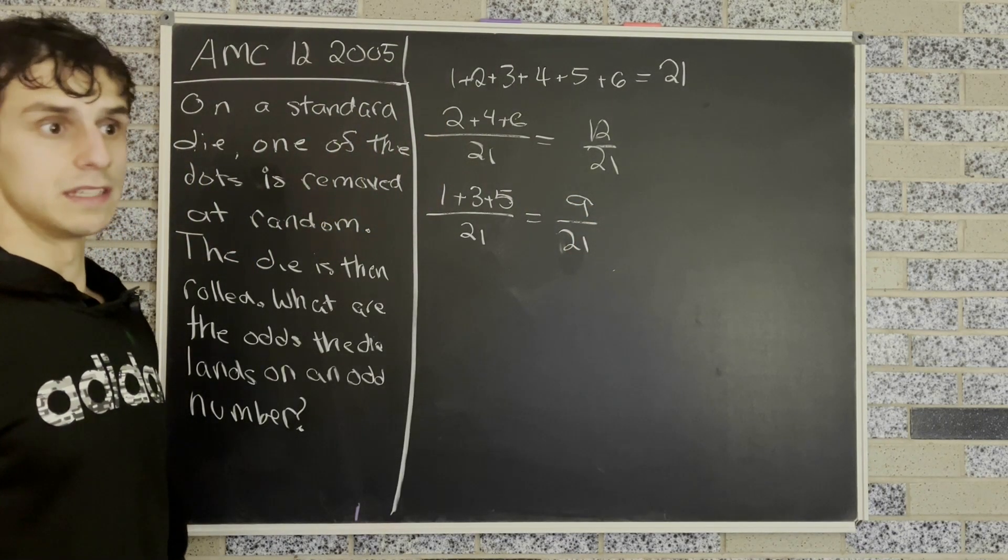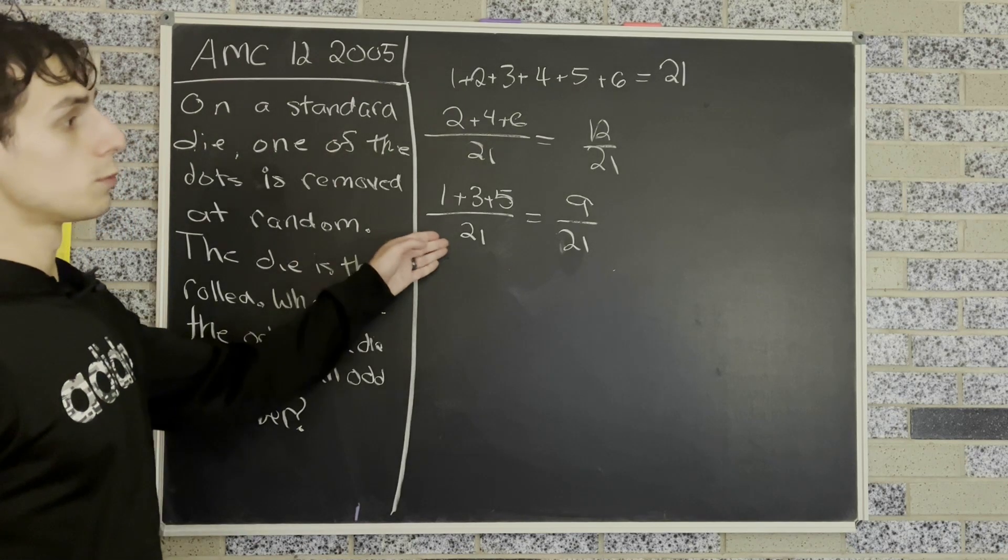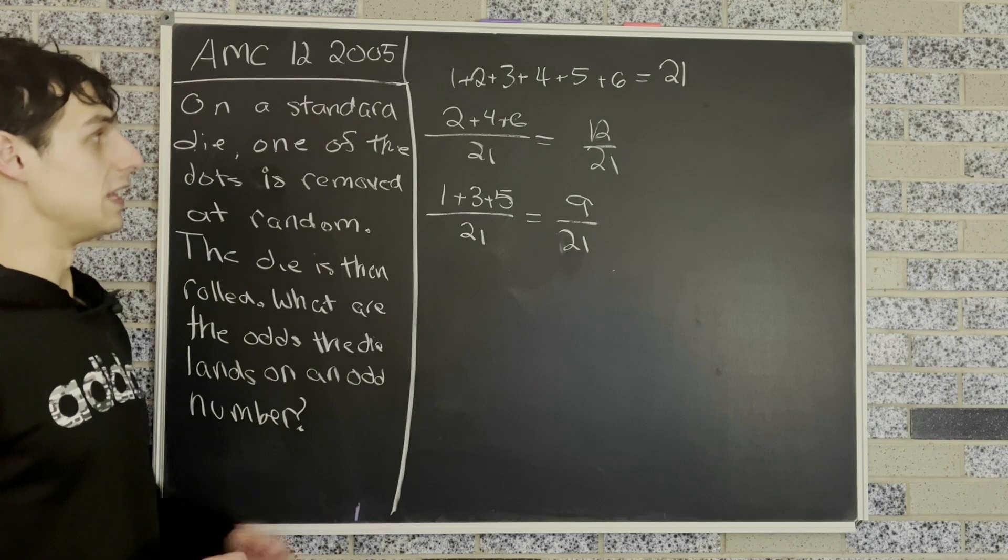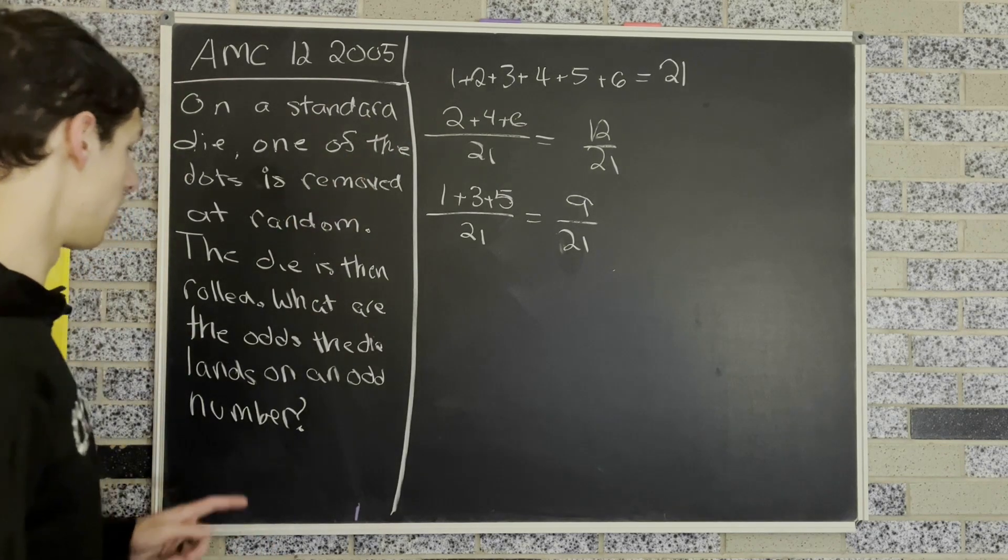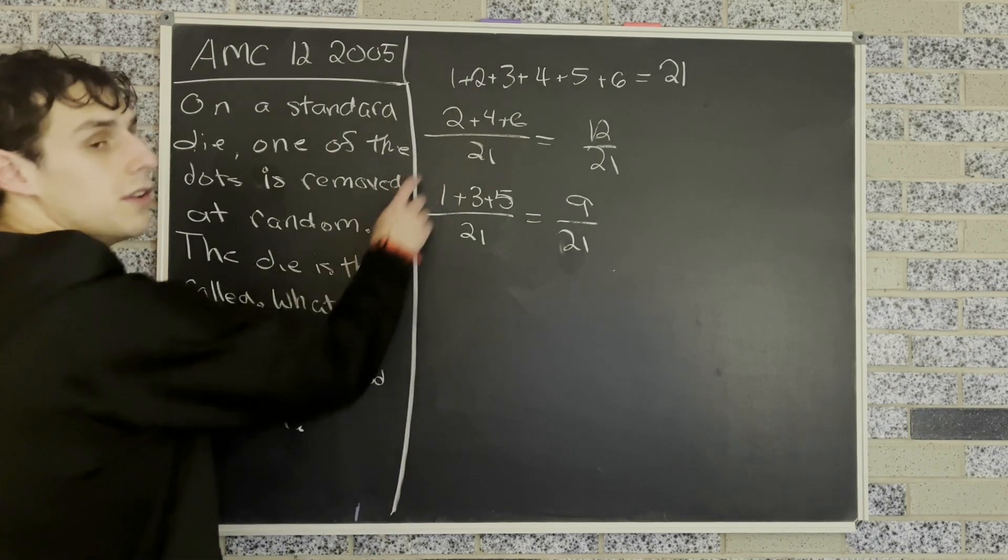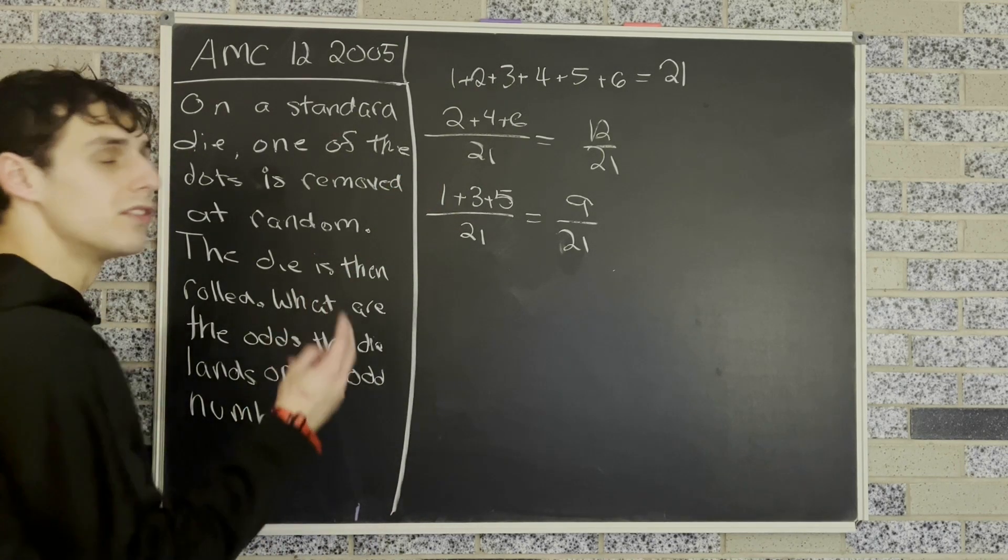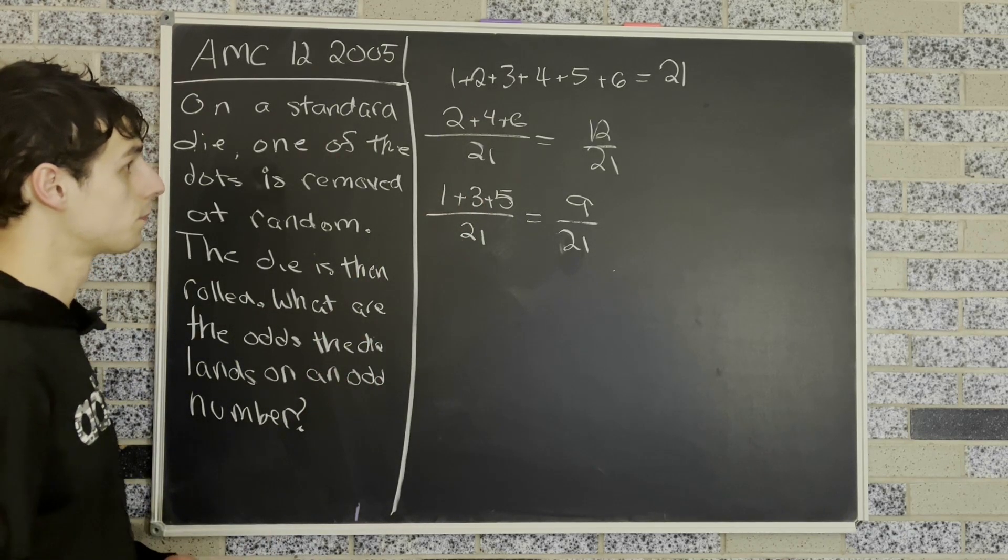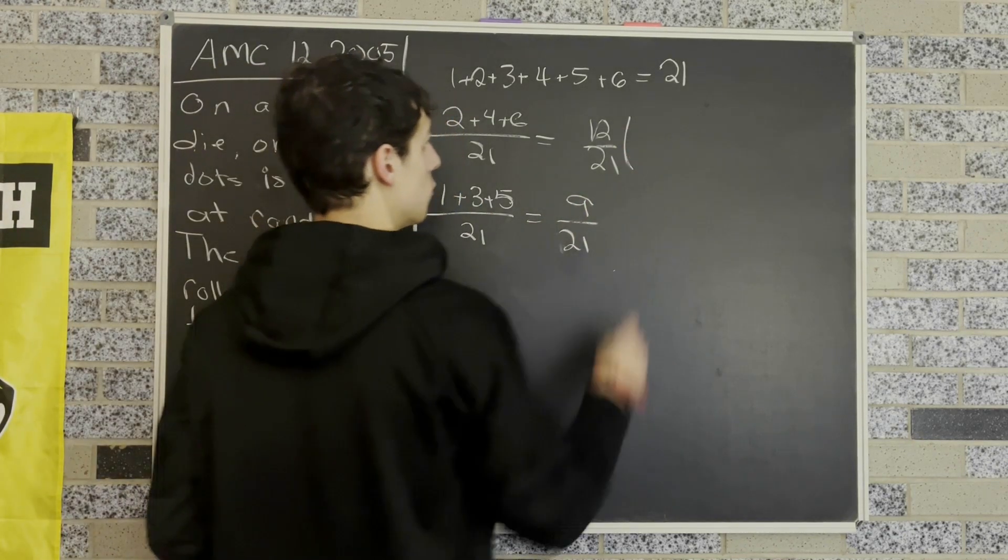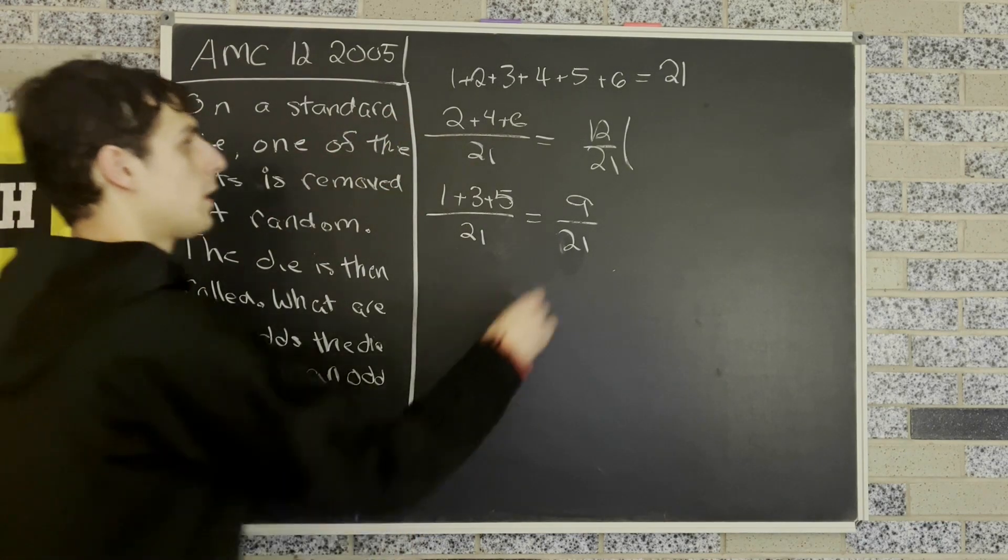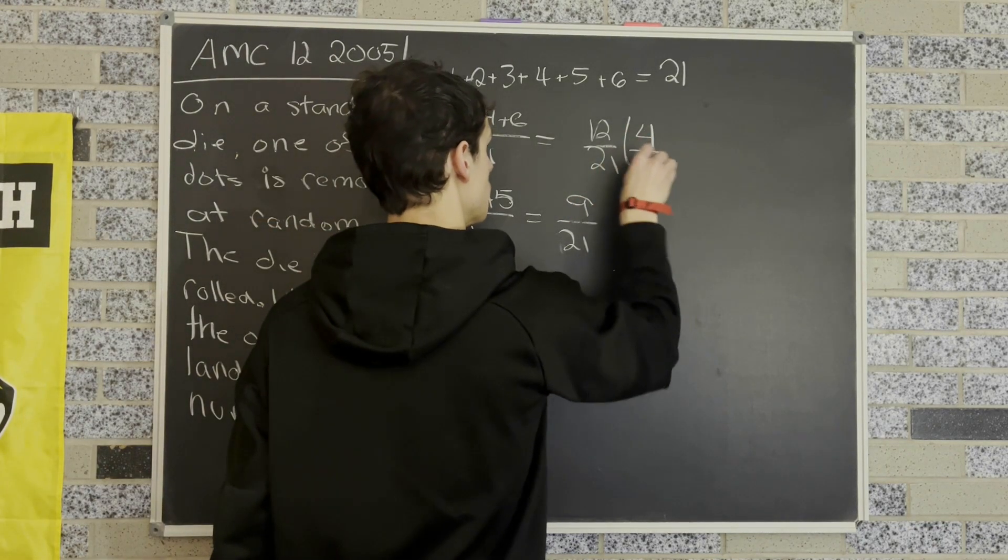Now what we want to do is find that if an odd number is removed, what are the odds that we roll an odd number? And if the even dot is removed, we want to find the odds that we roll an odd number. But we know that if a dot is removed from an even number, we have two even numbers remaining out of that group and one odd number, and then the three odd numbers here. So the odds of us rolling an odd number when we remove a dot from an even number is 4 over 6, or 2 thirds.